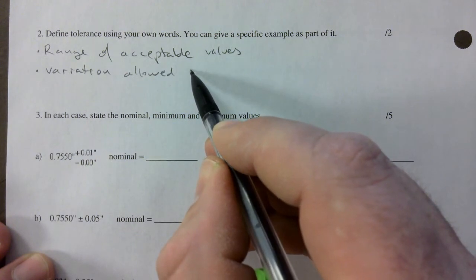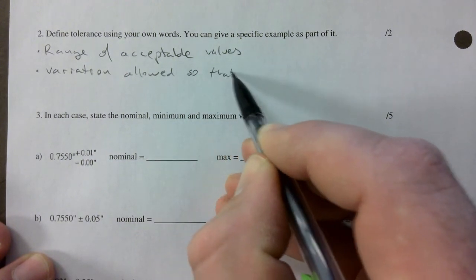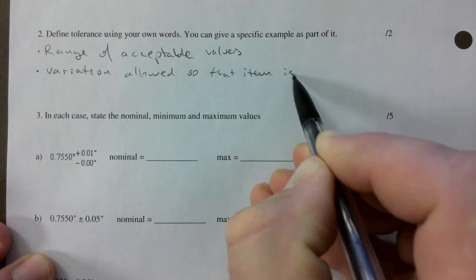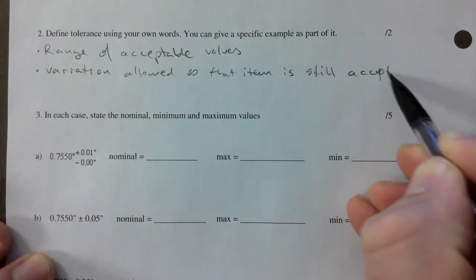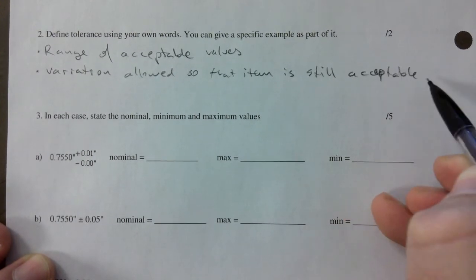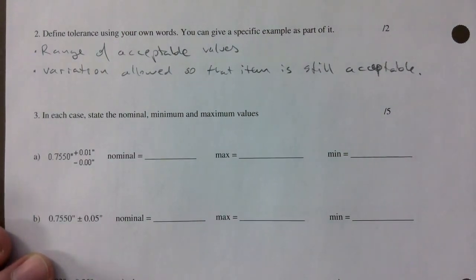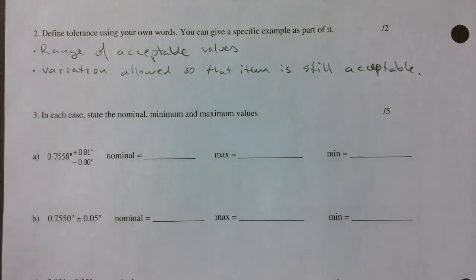So that item is still acceptable, something like that. And if you did have an example there, anything that I've given you is fine.